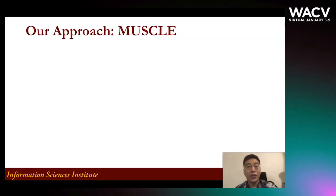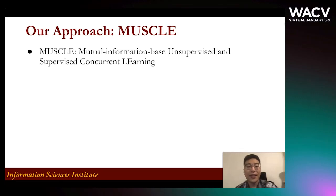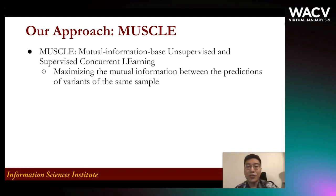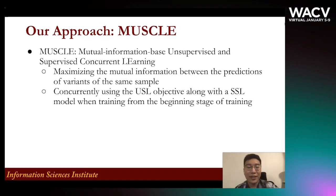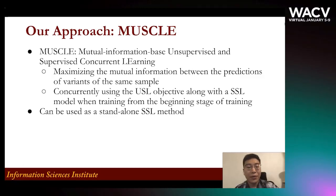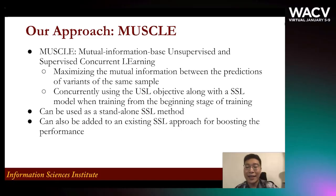For solving those issues, we propose our method MUSL. MUSL stands for Mutual Information-Based Unsupervised and Supervised Concurrent Learning. We maximize the mutual information between the predictions of variants of the same sample. Most importantly, we concurrently use the USL objective along with an SSL model when training from the very beginning stage of training. MUSL can be used as a stand-alone SSL method, or it can be added to existing SSL approaches for boosting performance. We will show some experiment results on this.